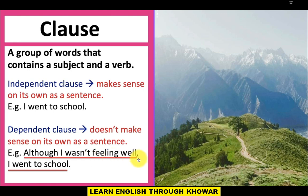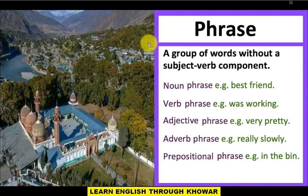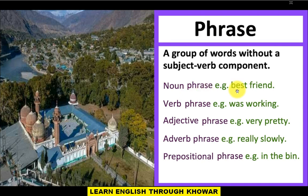Or next topic special share: phrase — a group of words without a subject-verb component. Or phrase special care been: a group of words, a harsh group of words, subject-verb component no way. Or phaser special carbonian different types: noun phrase, verb phrase. Example share noun phrase — 'best friend.' Best friend a special subject-verb component care niki.